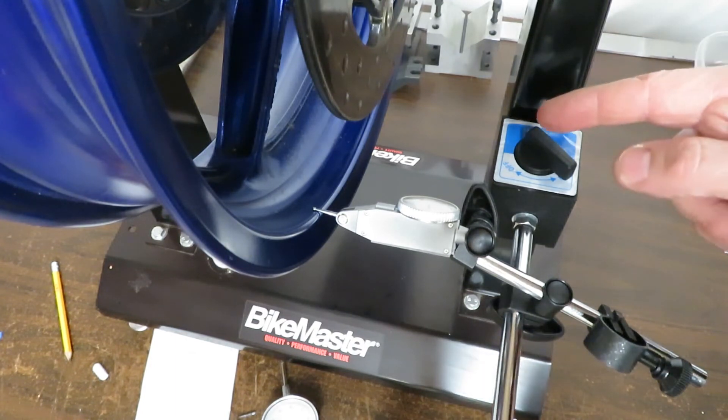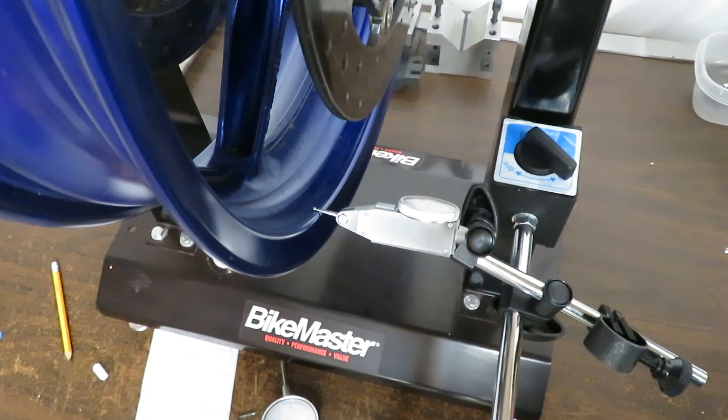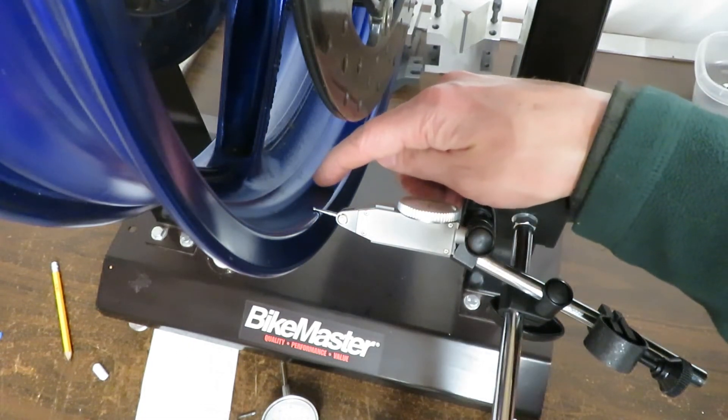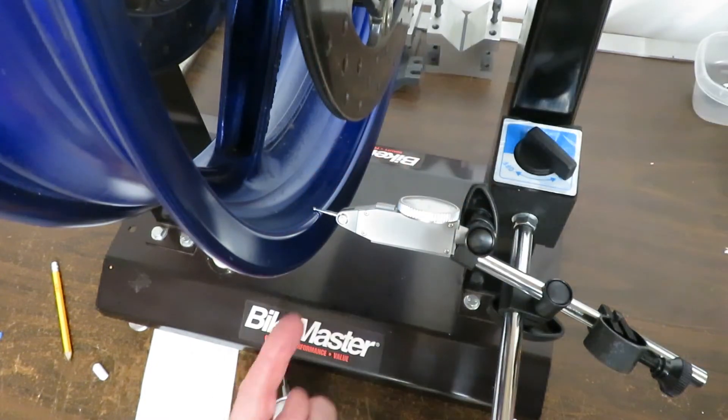So we'll give this one a try. You could also set up your dial gauge to measure the opposite side of this surface, on this side of the wheel.